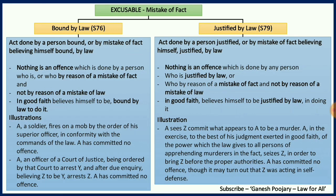There are two illustrations given in the Act. First: A is a soldier who fires on a mob by the order of his superior officer in conformity with the commands of the law — A has not committed any offense because he is bound by law to do it. Second: A, an officer of a court of justice, is ordered to arrest Y and after due enquiry, believing Z to be Y, arrests Z. A has not committed any offense because it is a mistake of fact — he did due enquiry and thought Z was Y, so it is not an offense under section 76.